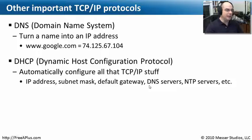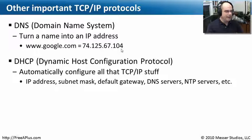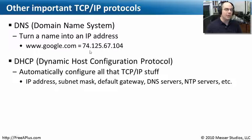Eventually we get a reply back that says, you need to go to google.com? Then you need to go to 74.125.67.104. At that point, our computer says, aha, I know how to get there. It sends that traffic out to the router, and magically it ends up at Google and comes back to us.